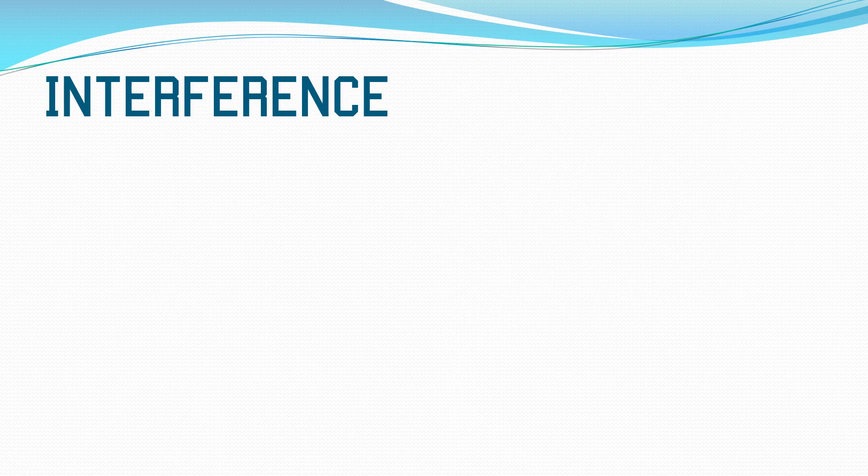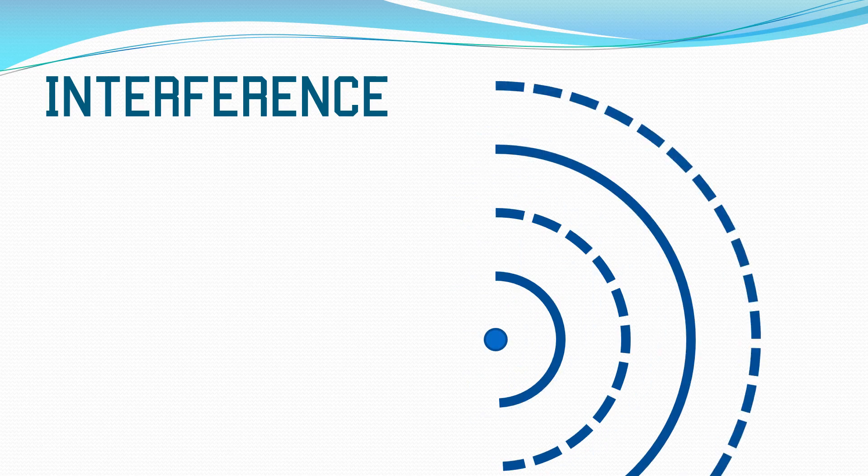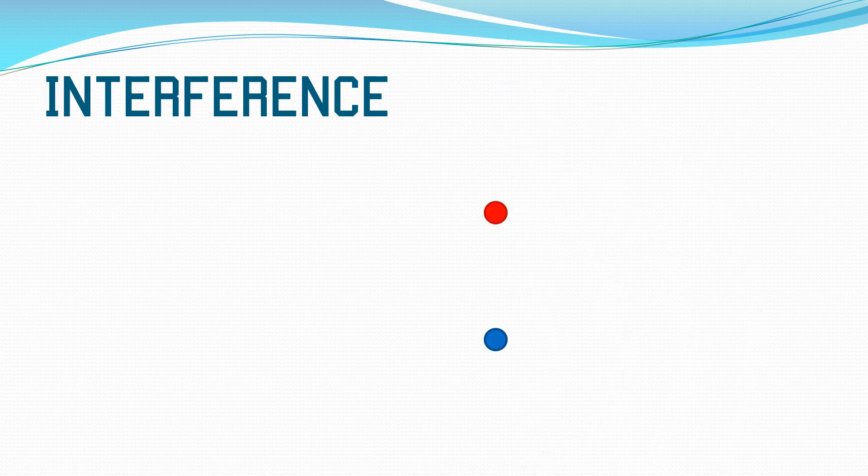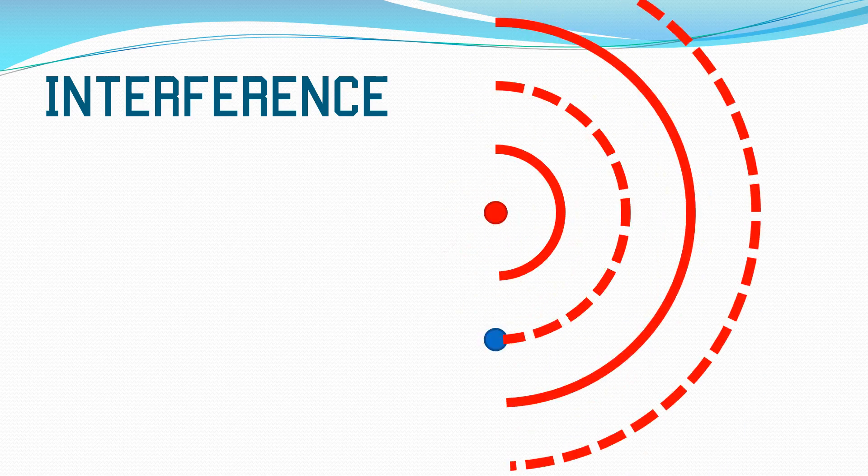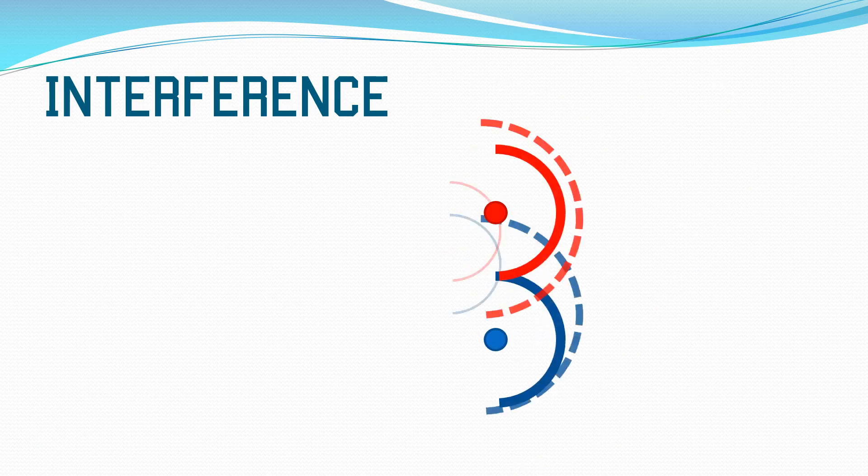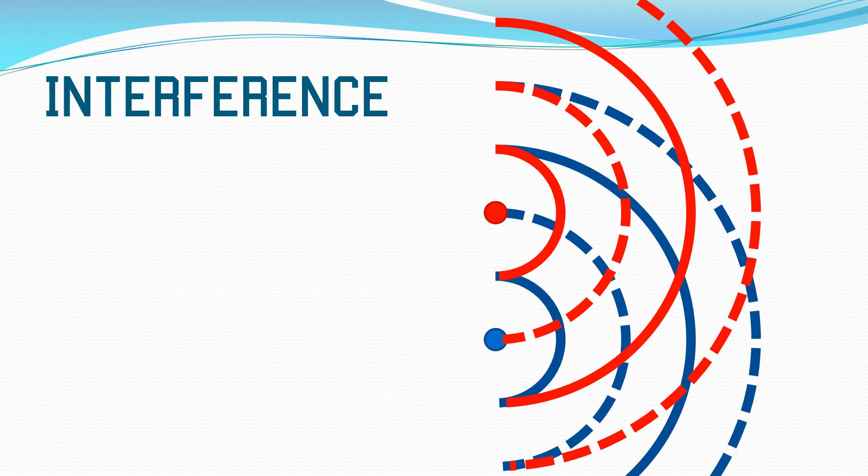We've seen interference with string waves or slinky waves, but we can also see it with water waves. Here's one wave that I've sent out, one circular wave. Let's set out another circular set of waves and see how they interact or interfere. If we let both waves go at the same time, we can see there are points where those waves are going to overlap or interfere.